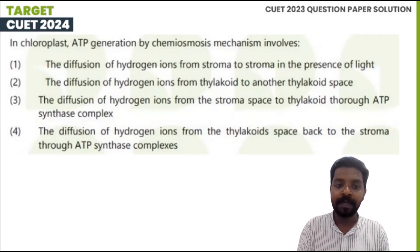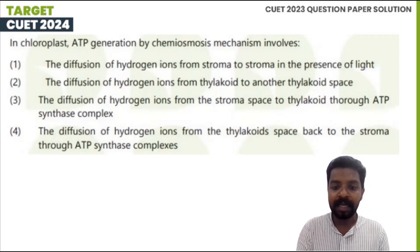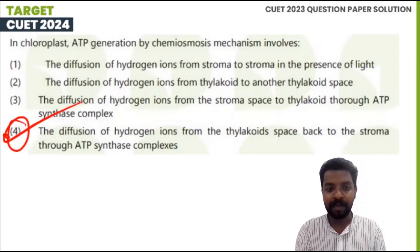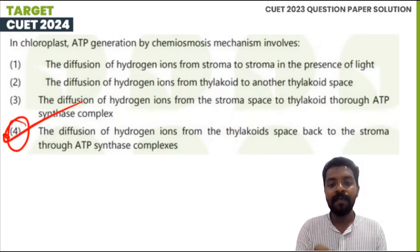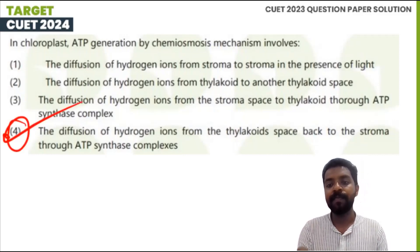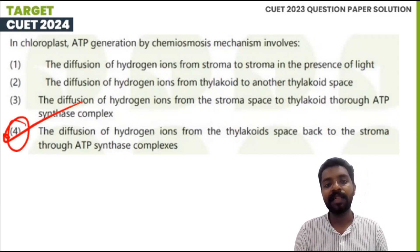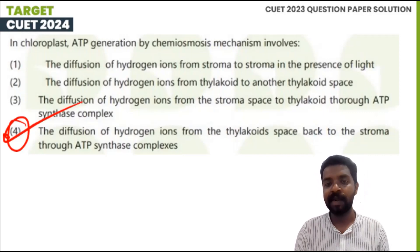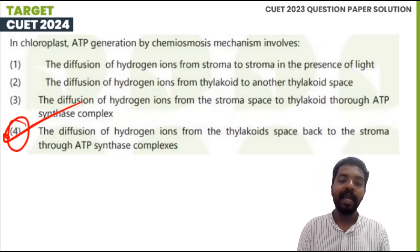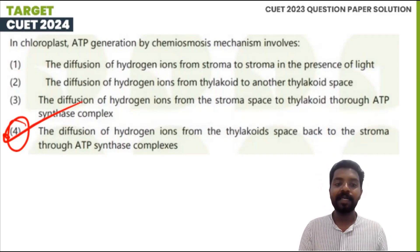The correct answer is: the diffusion of hydrogen ions from the thylakoid space back to the stroma through the ATP synthase complex. That is the correct mechanism of chemiosmosis for ATP generation.